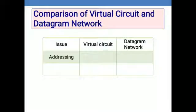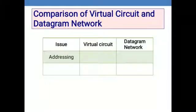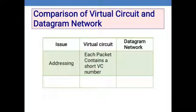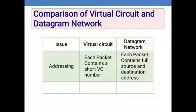We will look at the difference between virtual circuit and datagram networks across various issues. The first issue is addressing. In a virtual circuit, each packet contains a short VC number, meaning every packet carries the virtual circuit number. In a datagram network, each packet contains the full source and destination address.